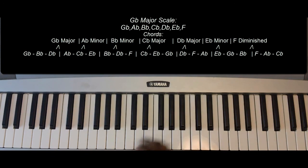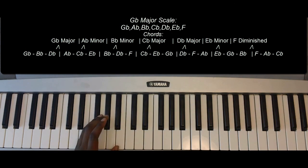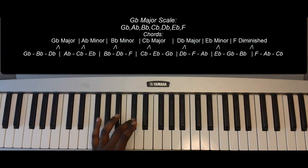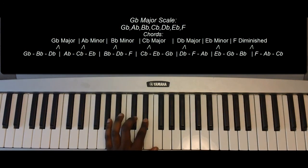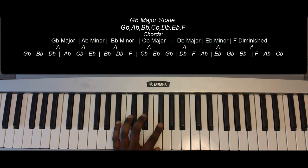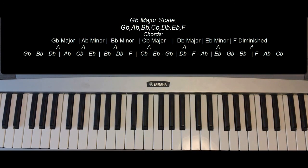The notes of the G-flat major scale are as follows: G-flat, A-flat, B-flat, C-flat, D-flat, E-flat, F, and G-flat. That is the G-flat major scale.